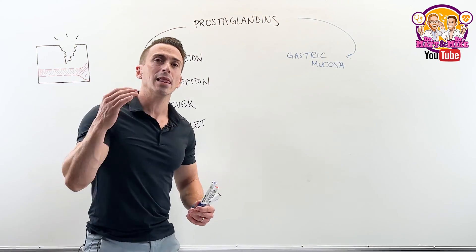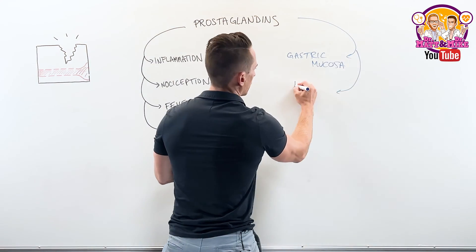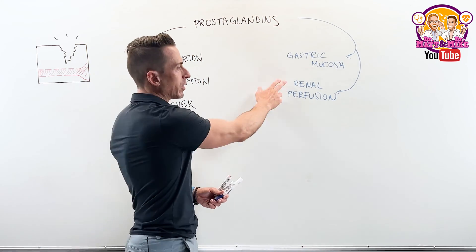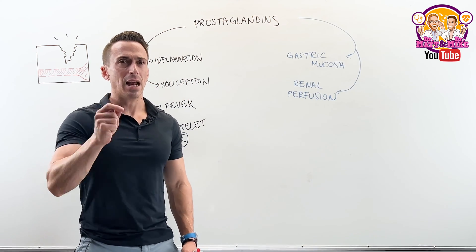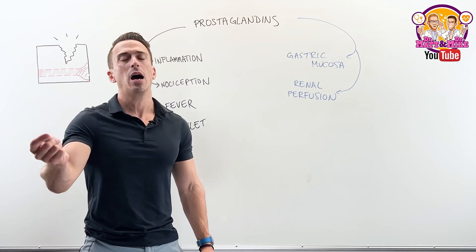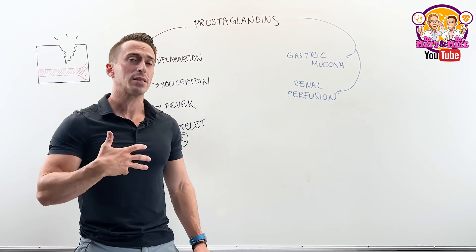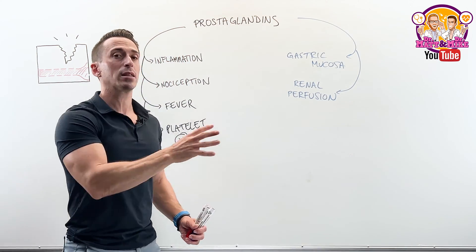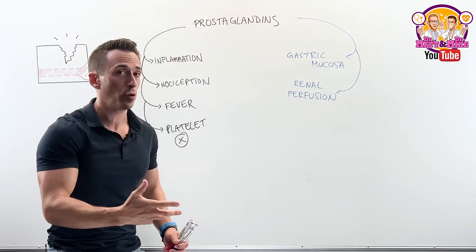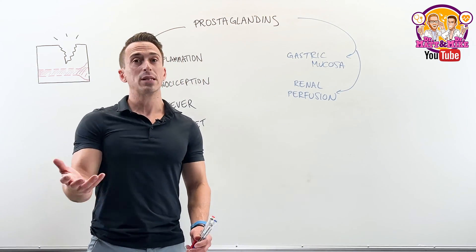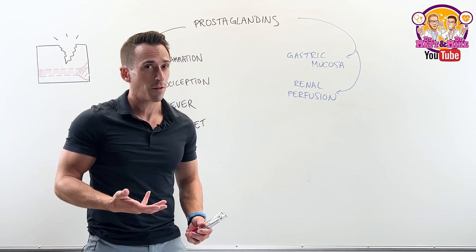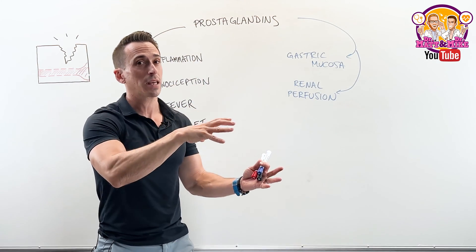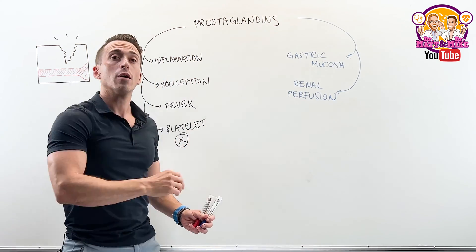Another thing prostaglandins do is allow us to maintain renal perfusion — that is, enough blood going to the kidneys. The kidneys must receive enough blood to filter 120 milliliters every single minute, filtering out unwanted substances. If the kidneys don't get the right amount of blood, metabolites and potentially toxic products can build up in the bloodstream and we get very sick very quickly. So prostaglandins vasodilate the blood vessels at the kidneys to maintain adequate blood flow for filtration.